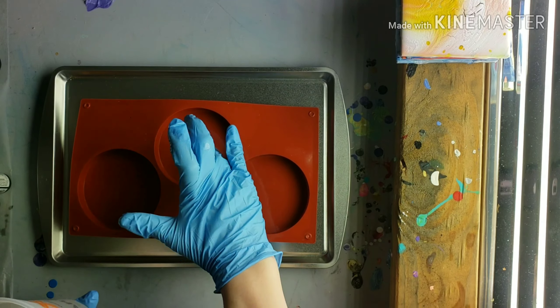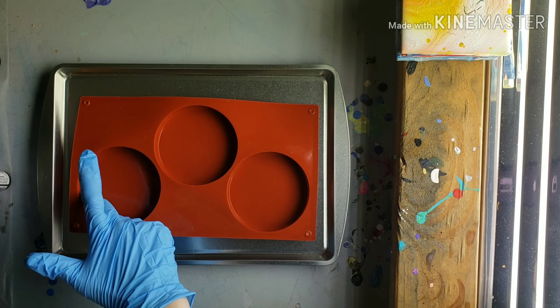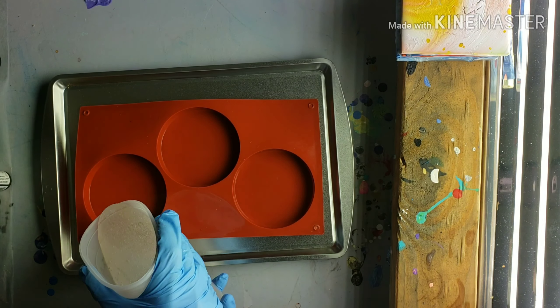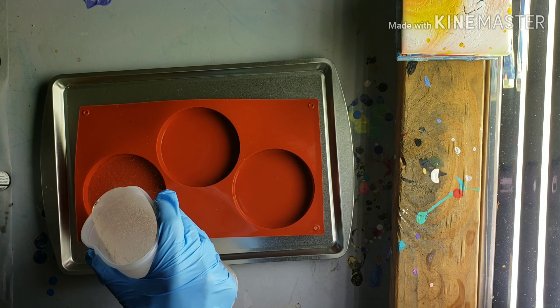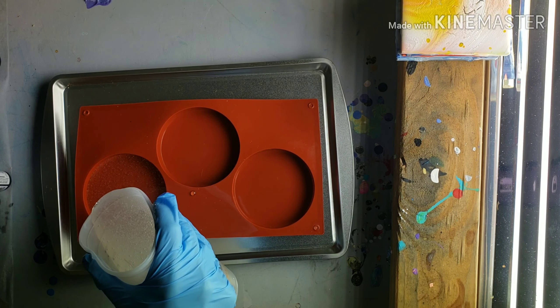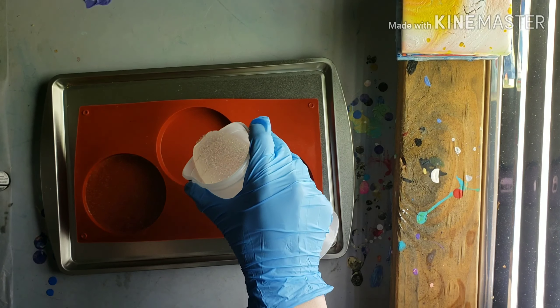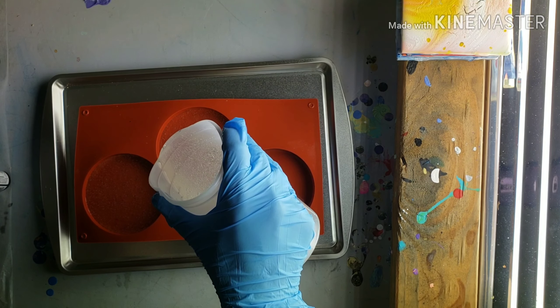I'm almost done stirring and the mold that I'm using I got off Amazon. It's just a little coaster mold and before you pour any resin in make sure there's no dust or debris inside your mold. These molds attract every single particle of dust that's in the room.